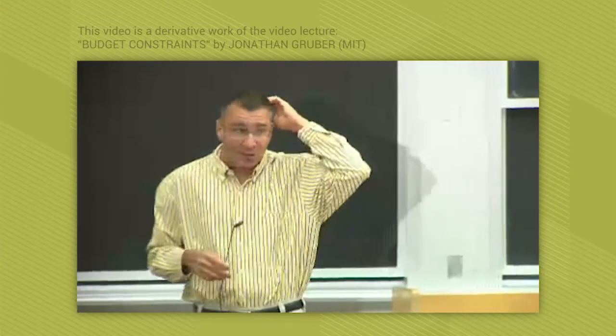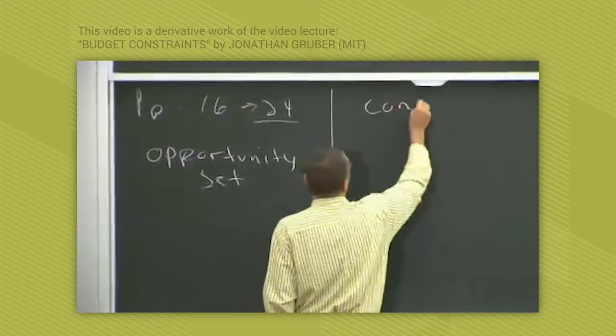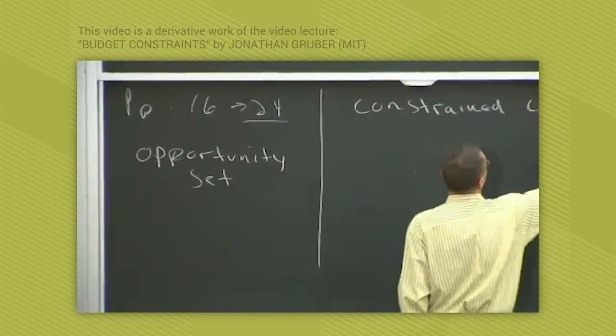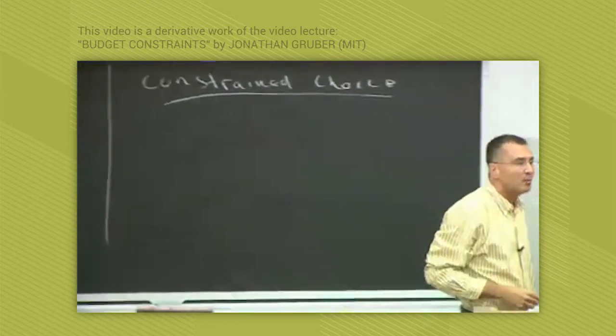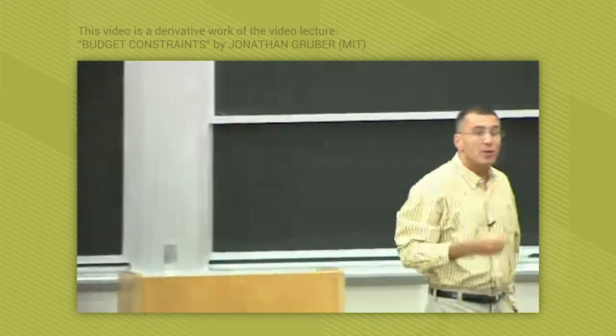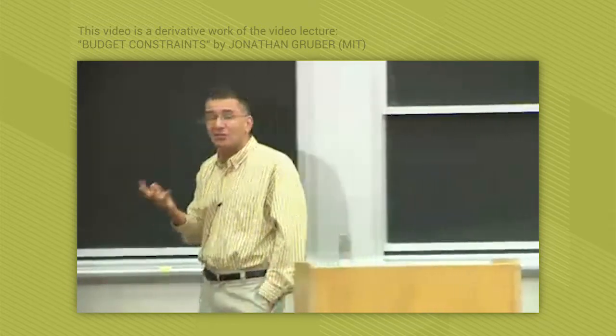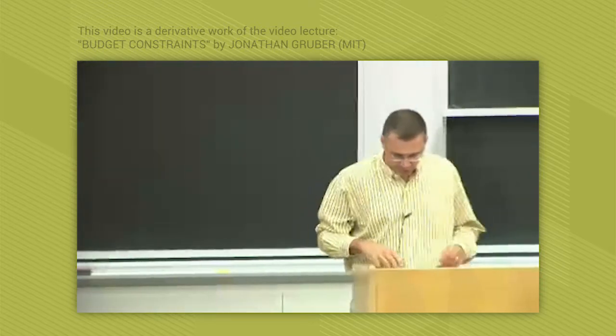Now that's a great segue to the next step. Let's put that together and talk about constrained choice, which is now let's put together what we know. We know what your preferences are. We've mathematically represented those by utility function. We know what your budget set is. We've mathematically represented that based on your income and prices. Now let's put them together and talk about how you make choices.